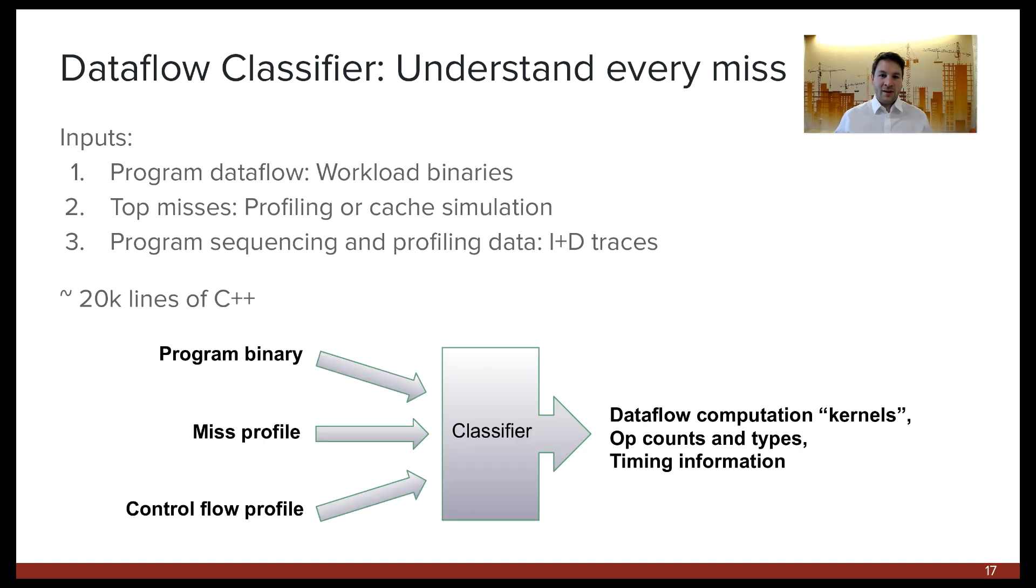We implemented our data flow methodology in a tool which has three inputs: the program binary, a miss profile, and a control flow profile. The output of our tool is a set of data flow kernels, which represent the reduced graphs from earlier. It also contains a lot of meta information about the size and complexity of these kernels, and how fast they can run relative to the main program. Our initial implementation took about 20,000 lines of code, with a majority of the footprint being devoted to graph reductions.